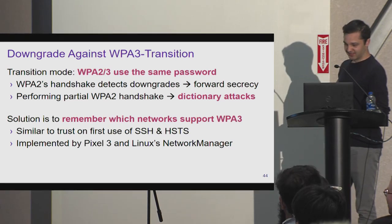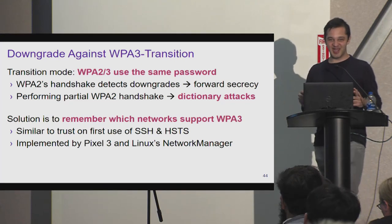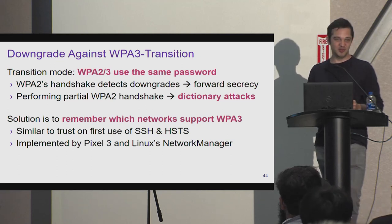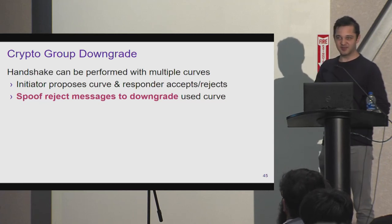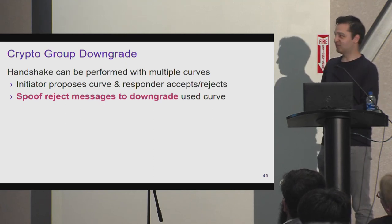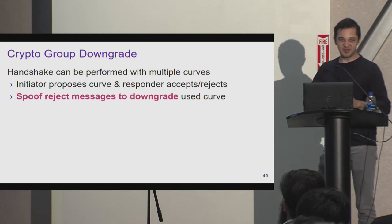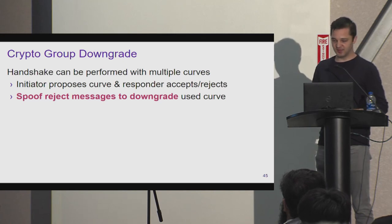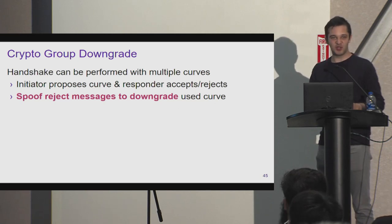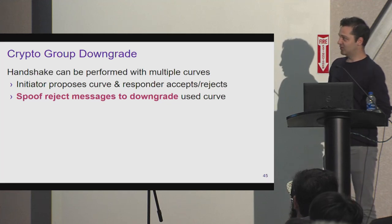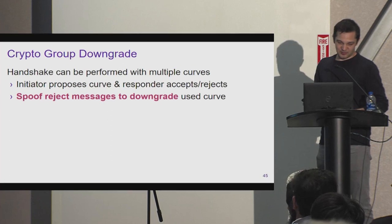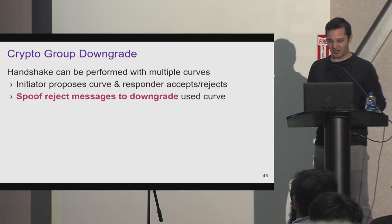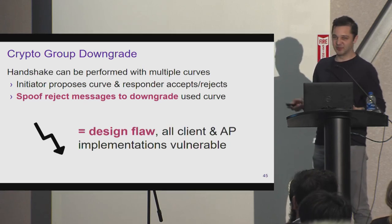There is also a group downgrade attack. Since Dragonfly supports many modP groups and elliptic curves, the initiator suggests a group and the responder says yes or no. The reject message can easily be spoofed, and there is no mechanism after the handshake to detect manipulation. An attacker can simply jam a message — feasible with cheap Wi-Fi devices — forcing a downgrade to a weaker group. This is a design flaw in the standard, and all implementations are vulnerable. The only defense is to only use elliptic curves or modP groups known to be secure.